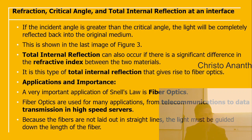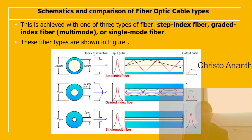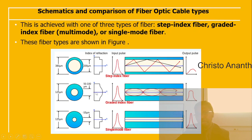Total internal reflection gives rise to fiber optics, an important application in telecommunications and high-speed data transmission. There are three types of fiber optic cables: step index fiber (~380 µm), graded index fiber (~125 µm with 50–100 µm core), and single mode fiber (~125 µm outer, ~10 µm core). In step index fiber, light reflects in a zigzag pattern and the output pulse shows a slow rise.